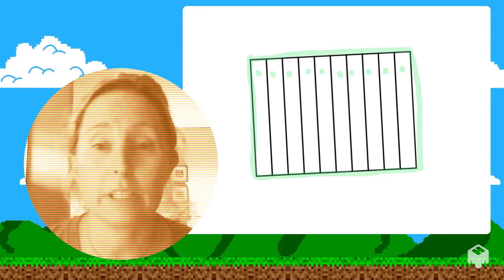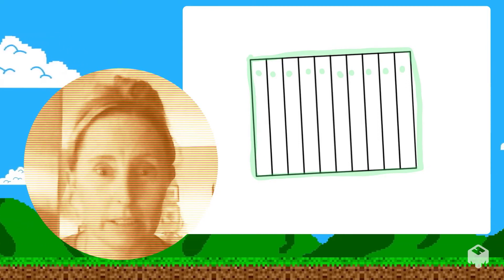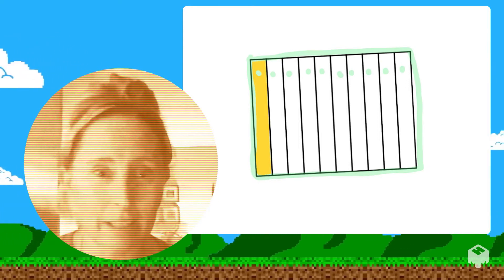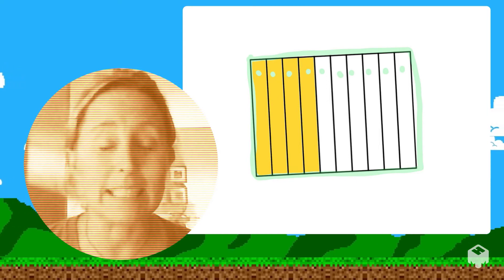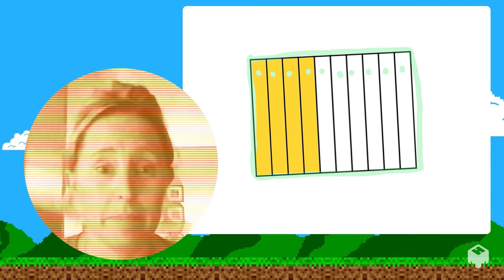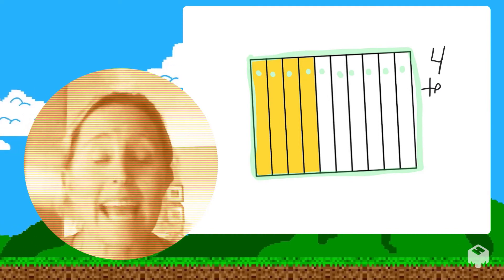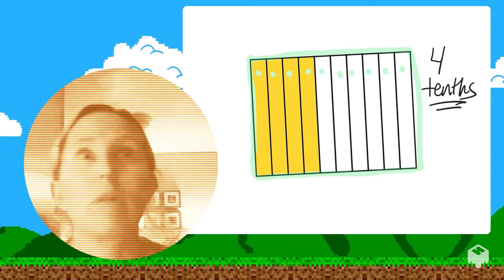So all together I have four—four what? Four tenths. And remember, the tenths live right next door to the decimal point, so my number would look something like this: 0.4, zero and four tenths.